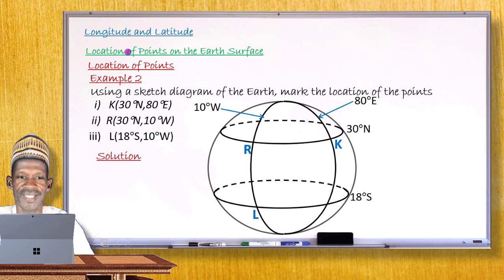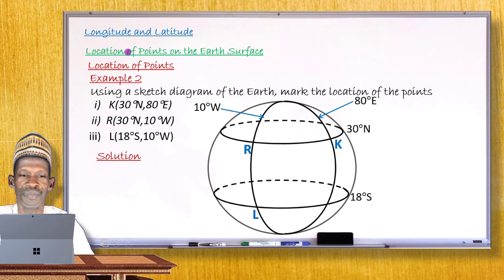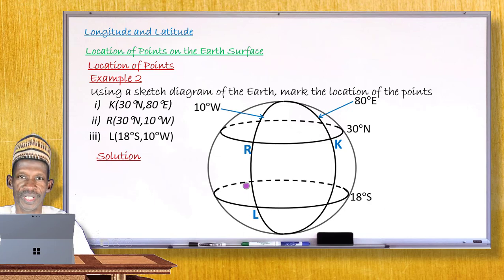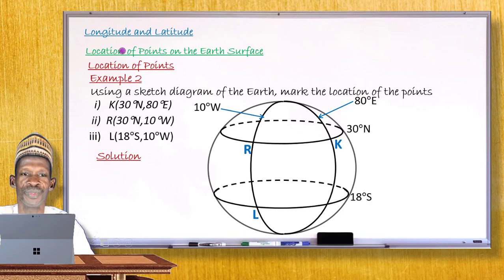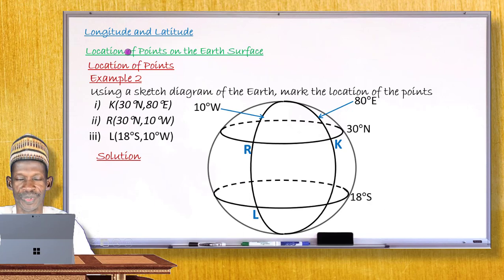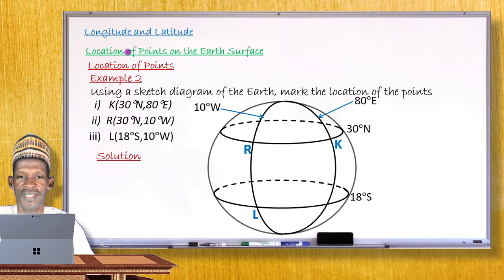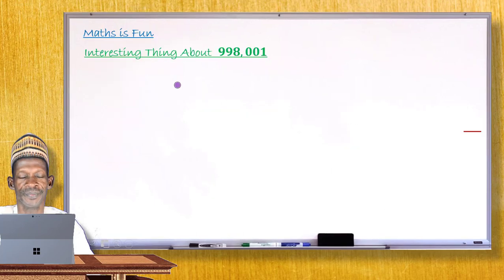This is the end of this lesson, my dear student. I hope with the few examples given, you'll be able to write the locations of points on the earth's surface. Thank you for your attention. Now let me move to the last segment — Maths is Fun — and explain what is interesting about that number, 998,001.